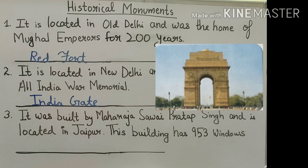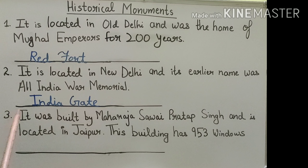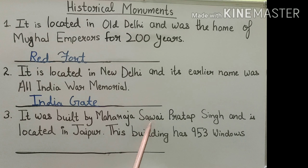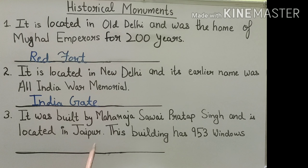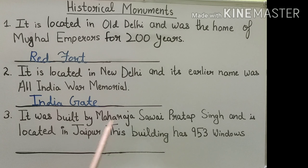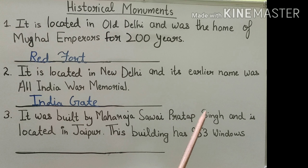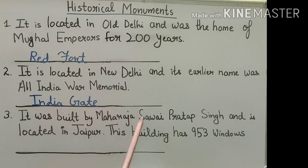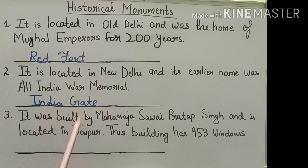Now, question number 3: It was built by Maharaja Sawai Pratap Singh and is located in Jaipur. This building has 953 windows. It was built by Maharaja Sawai Pratap Singh — is building ko Maharaja Sawai Pratap Singh ne banaya tha — and it is located in Jaipur.